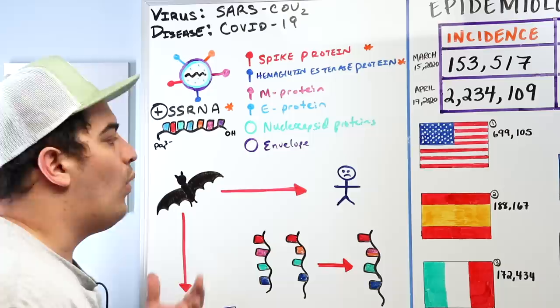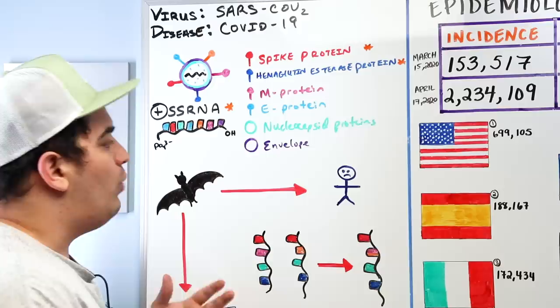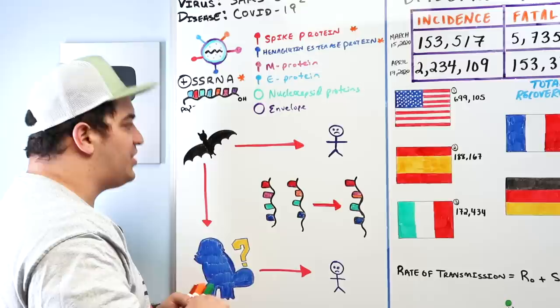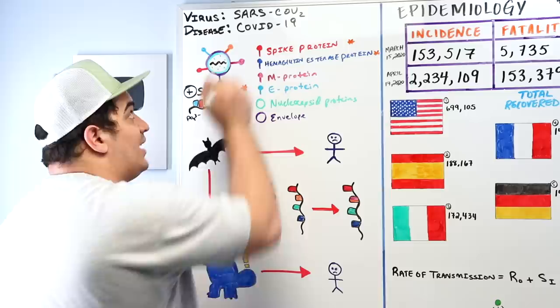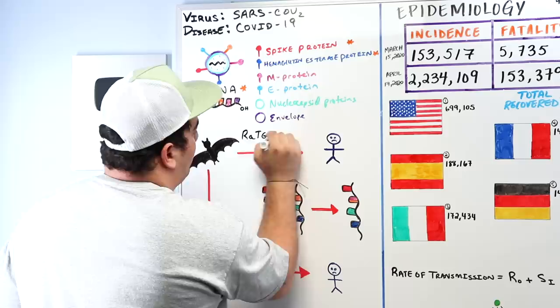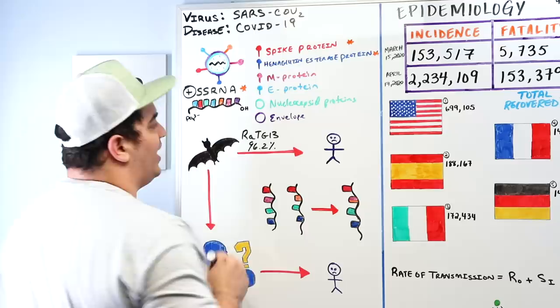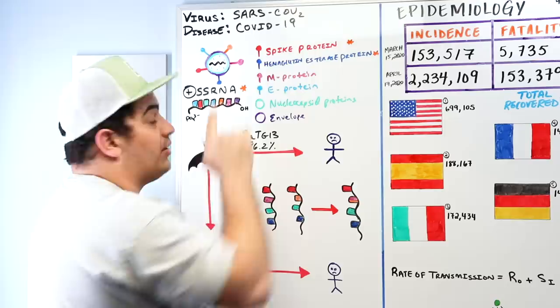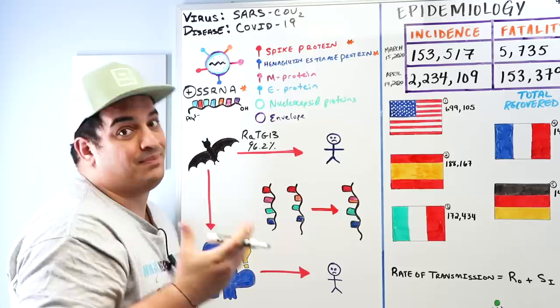Where did this virus come from? We don't completely know. Research shows a 96.2% genetic similarity between the bat coronavirus RATG13 and SARS-CoV-2, suggesting bats may be a reservoir.